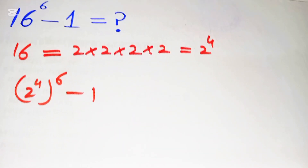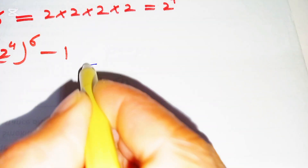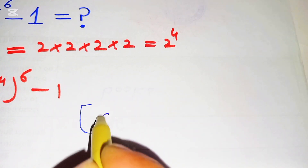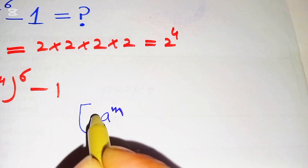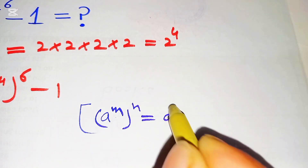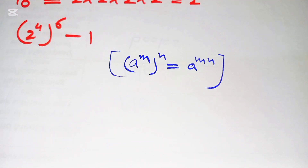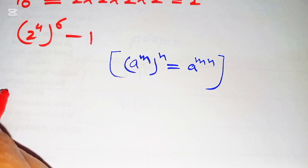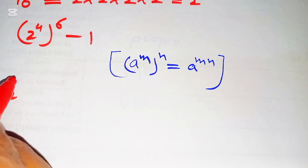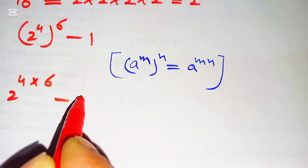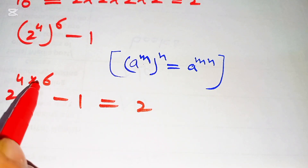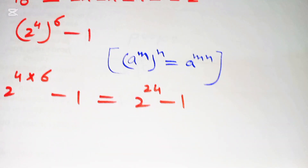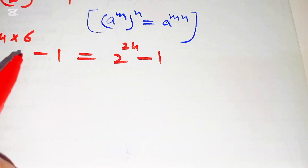Now here we can apply a nice exponential law which is: a to the power of m, whole to the power of n, is equal to a to the power of m times n. So we multiply powers: 2 to the power of 4 multiplied by 6, then minus 1, and this is equal to 2 to the power of 24 minus 1.